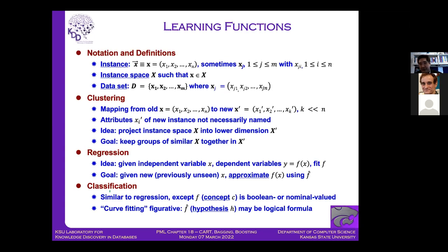Clustering typically involves dimensionality reduction by feature extraction or feature construction rather than selection. In our research we do significant work with feature extraction — autoencoders, variational autoencoders — and also feature selection using traditional subset selection search or feature importance, a wrapper technique that has been around for several decades.